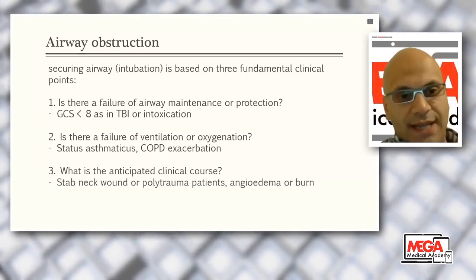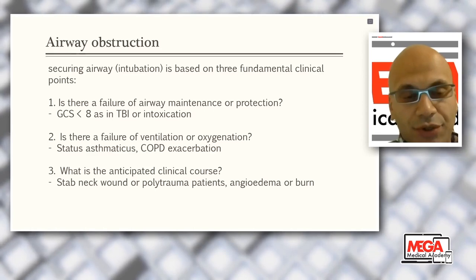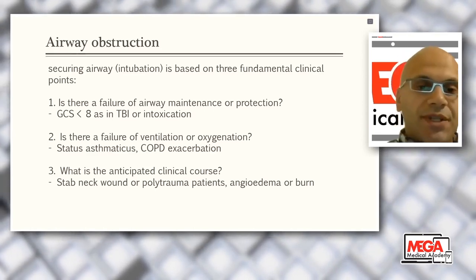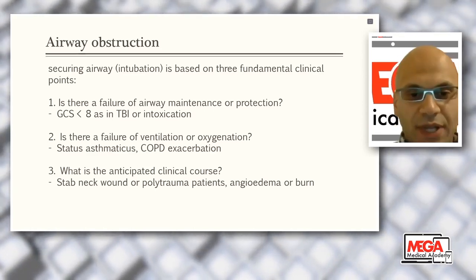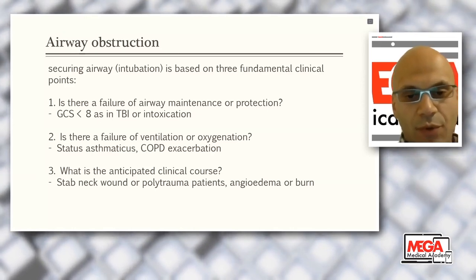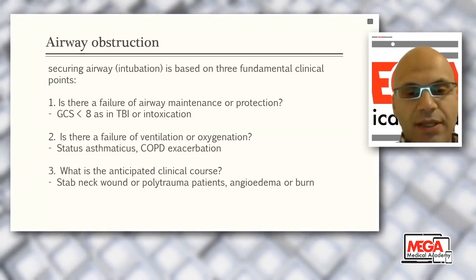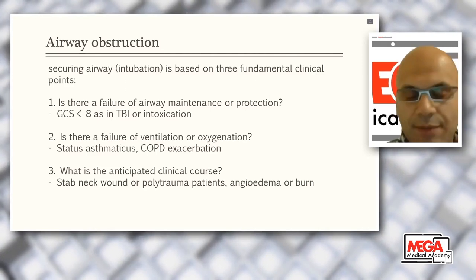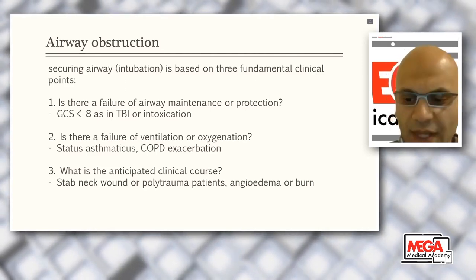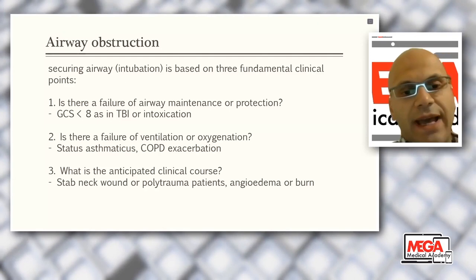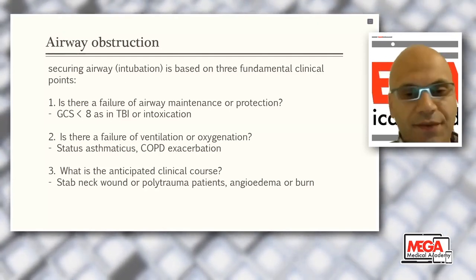Intubation is based on three fundamental clinical points. First: is there failure of airway maintenance and protection, like low GCS less than eight, traumatic brain injury, or intoxication? Second: is there failure of ventilation and oxygenation, like status asthmaticus or COPD exacerbation? Third: what is the anticipated clinical course? This is very important and depends on experience. Patients with stab neck wounds, polytrauma, angioedema, or burns can present with mild or no airway symptoms but can rapidly progress to complete airway obstruction. You must anticipate the progression.